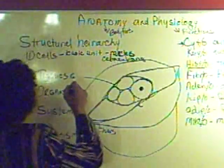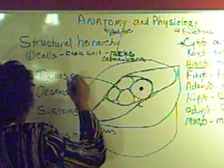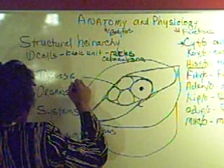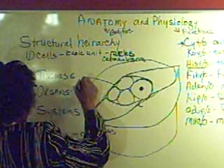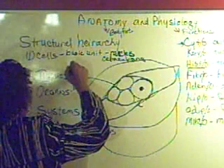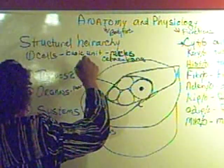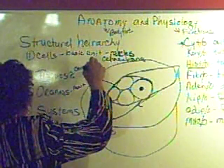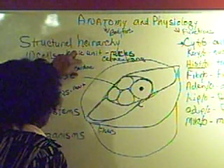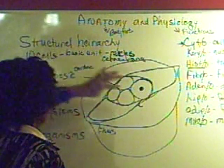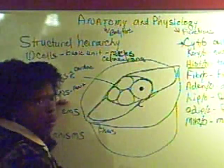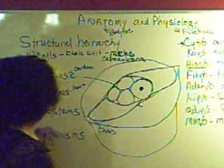An example of an organ would be the heart. An example of tissues would be cardiac tissue. And when you get all the cardiac tissue together, all of these cardiac tissues together, they form the organ of the heart.